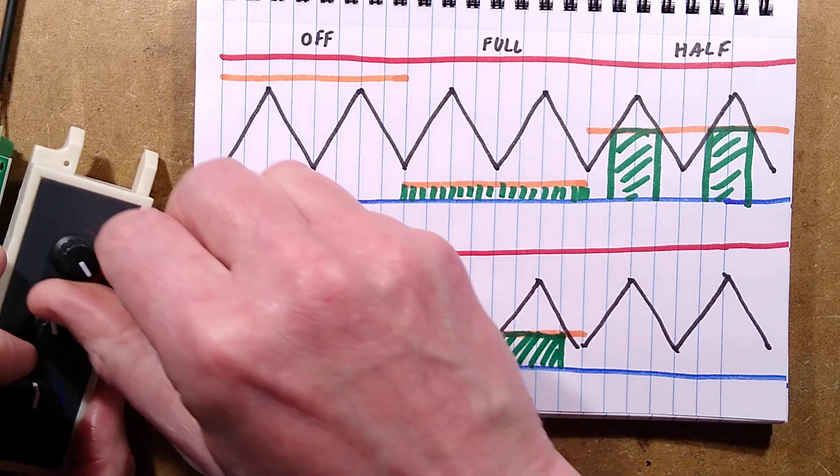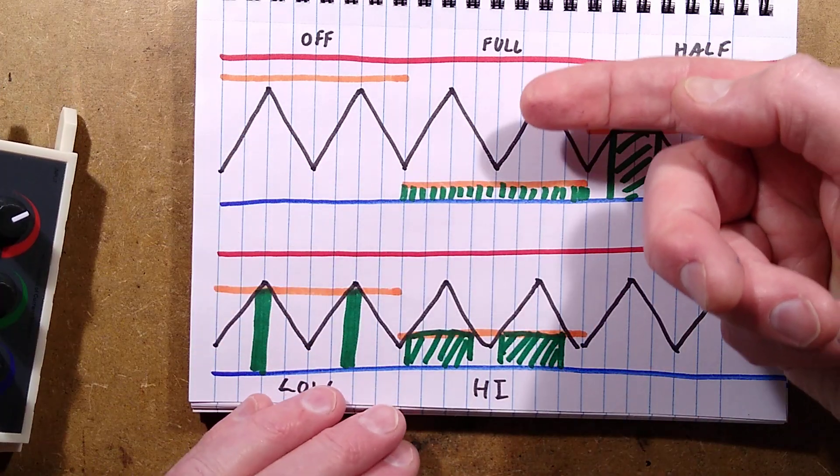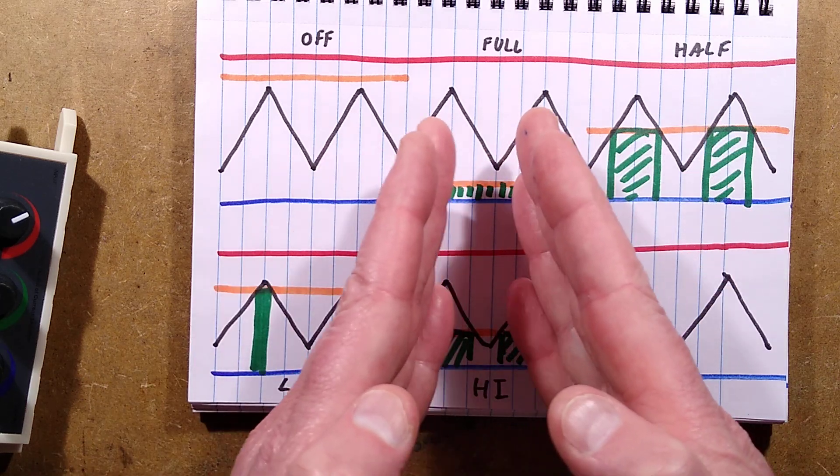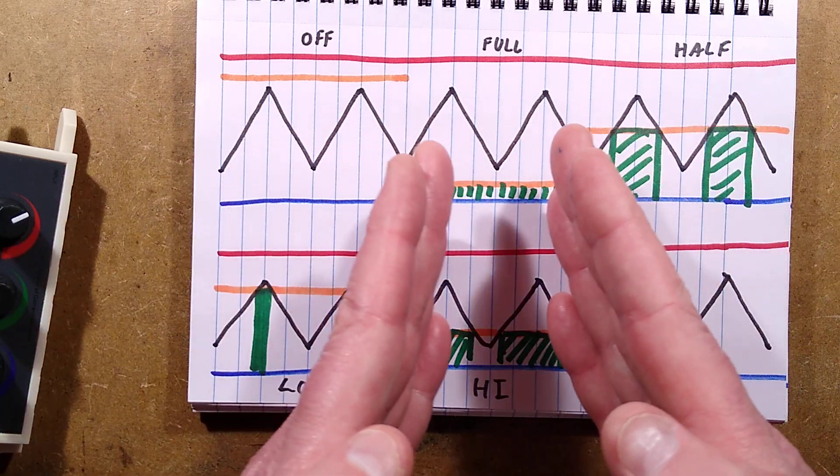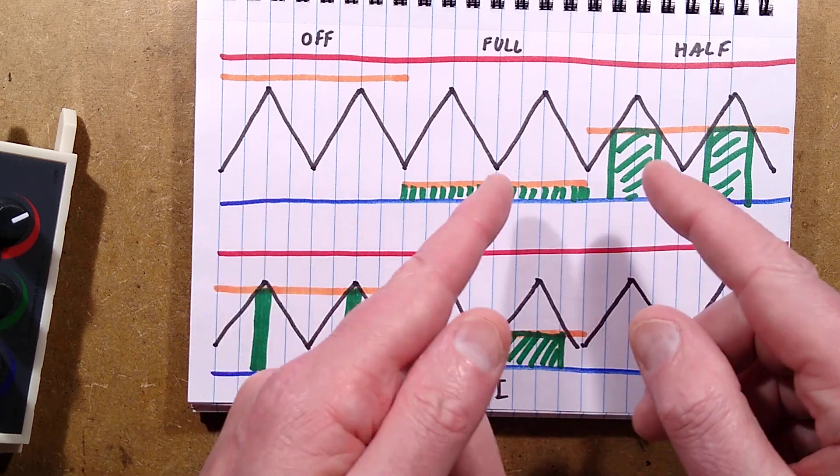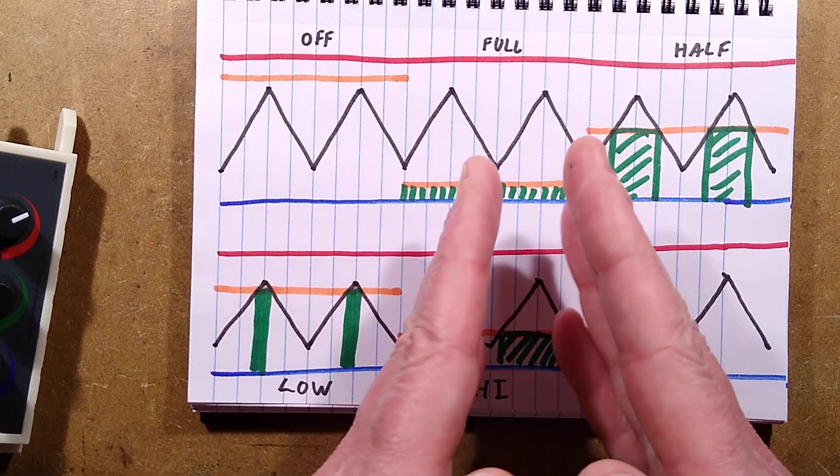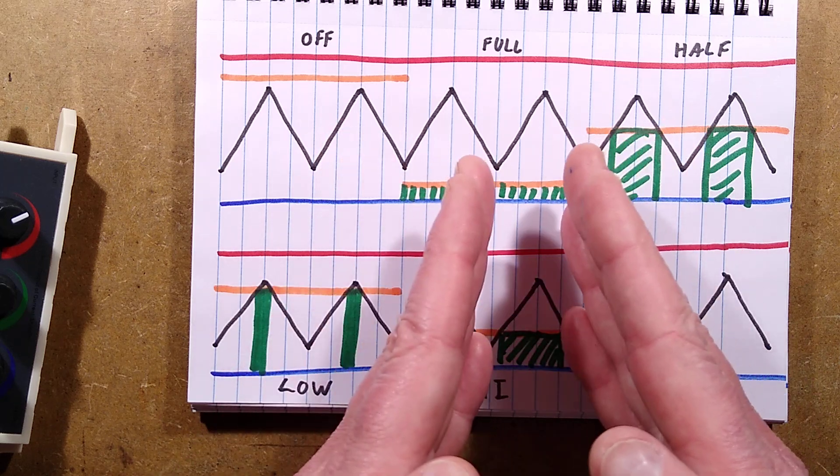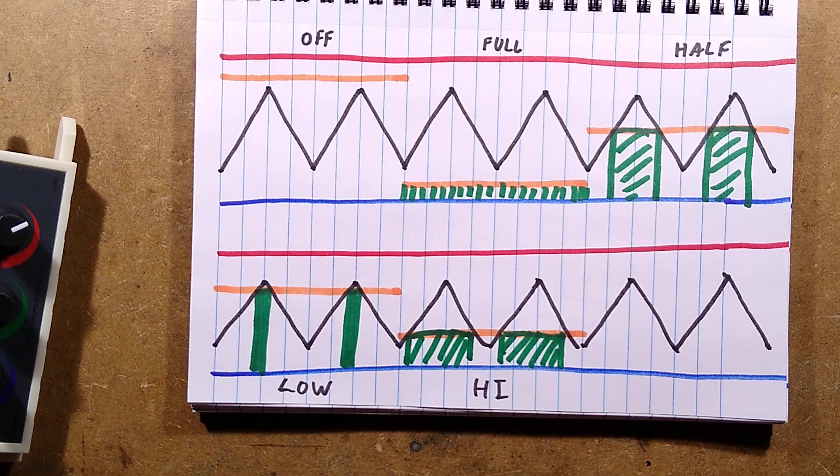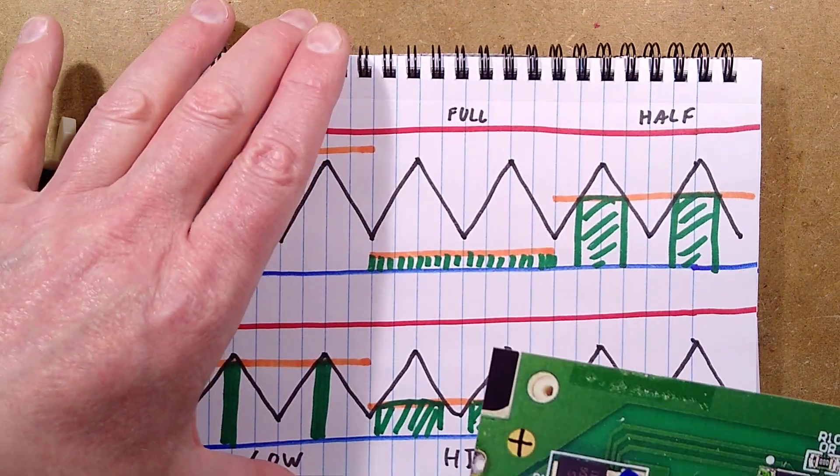Basically speaking, by turning this knob, you're controlling where that orange line is in the triangular waveform, and effectively, that creates the different pulse width modulation ratios. The mark space ratio will always add up to be sort of equal. The actual width of the on-to-the-off ratio will change.